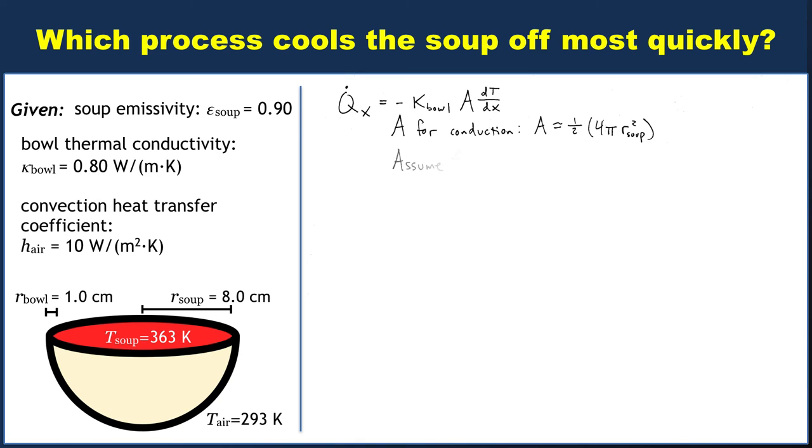We'll also assume that dT/dx is constant. This is not guaranteed by any means. We're doing this to simplify our lives so that we can make it into a ΔT/Δx, because we don't know what else to do at this point.